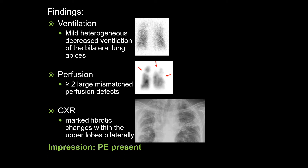However, during the critical finding call, it was relayed that there was low clinical suspicion of PE in this case. The low clinical suspicion raises the likelihood that the perfusion abnormalities are related to non-embolic causes, i.e., the lung fibrosis. Despite this, a CTA of the chest is warranted, if possible, to confirm the absence of PE in this patient.